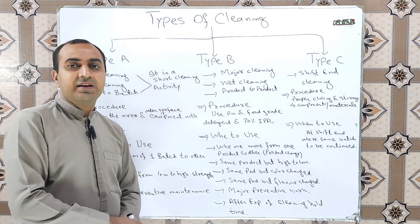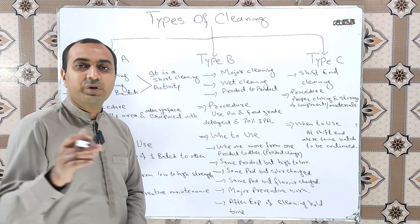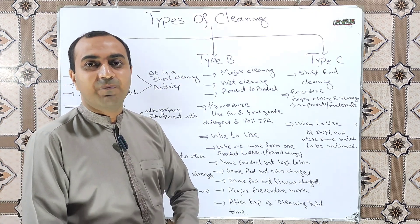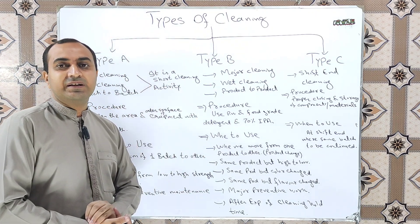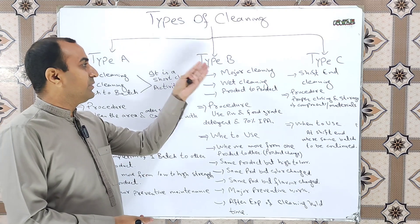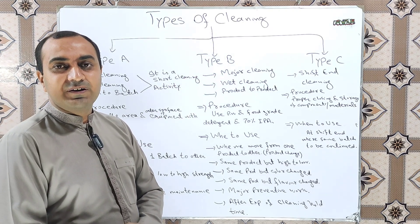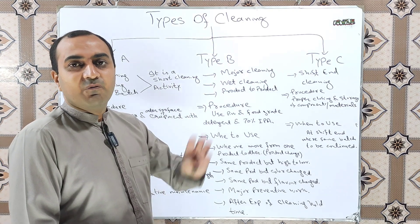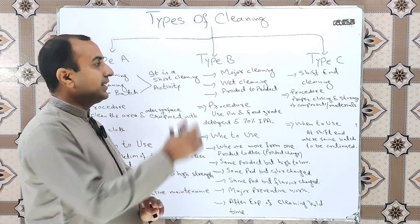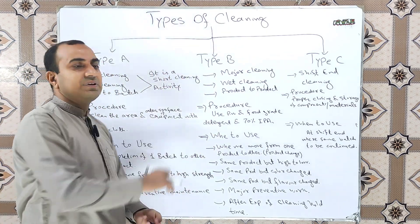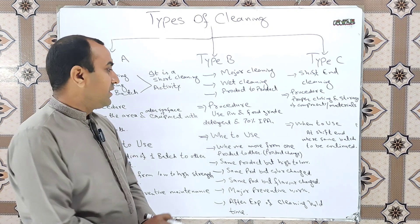Don't be confused — in the SOPs of some pharma companies they call Type A as major cleaning and Type B as minor cleaning. In the standard procedure we are using here, Type A is minor cleaning and Type B is major cleaning.